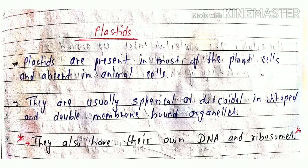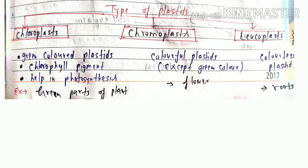The next cell organelle is plastid. Plastids are present in most plant cells and absent in animal cells, because animal cells are heterotrophic while plant cells are autotrophic. Plastids help plants form their own food through photosynthesis. They are usually spherical or discoidal in shape and are double membrane bound. Plastids also have their own DNA and ribosomes, making them self-replicating and semi-autonomous units of the cell.